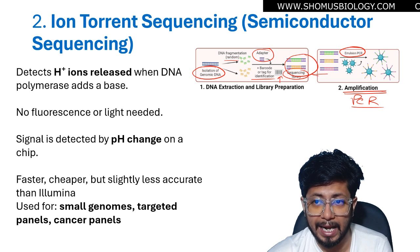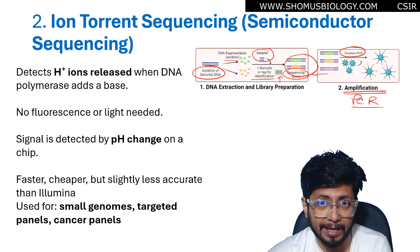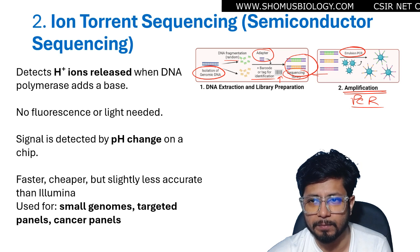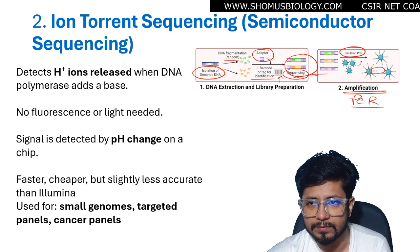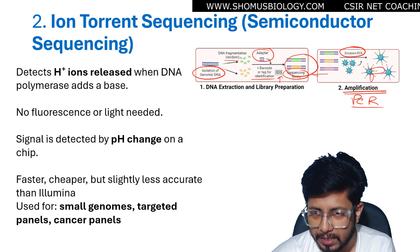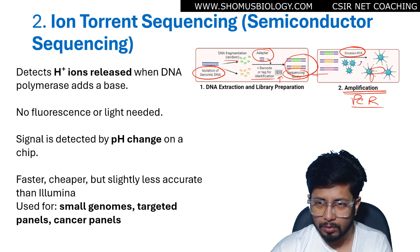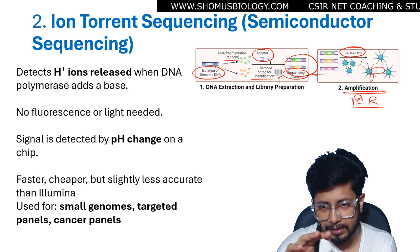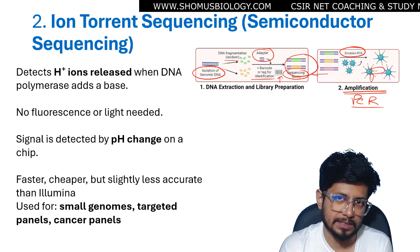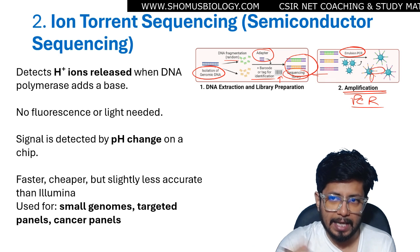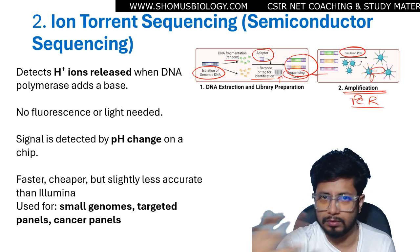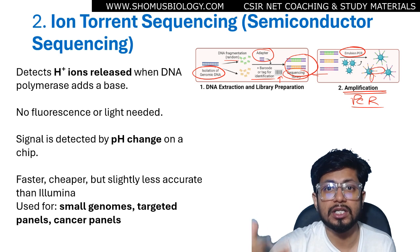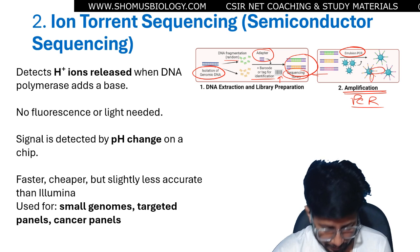These oligos have sequence complementarity to the adapters of our target DNA fragments, so the adapters bind to the oligos protruding from the beads. The beads, oligos, and DNA fragments are all emulsified together in oil, and PCR is run within that emulsion. This is called emulsion amplification or emulsion PCR.